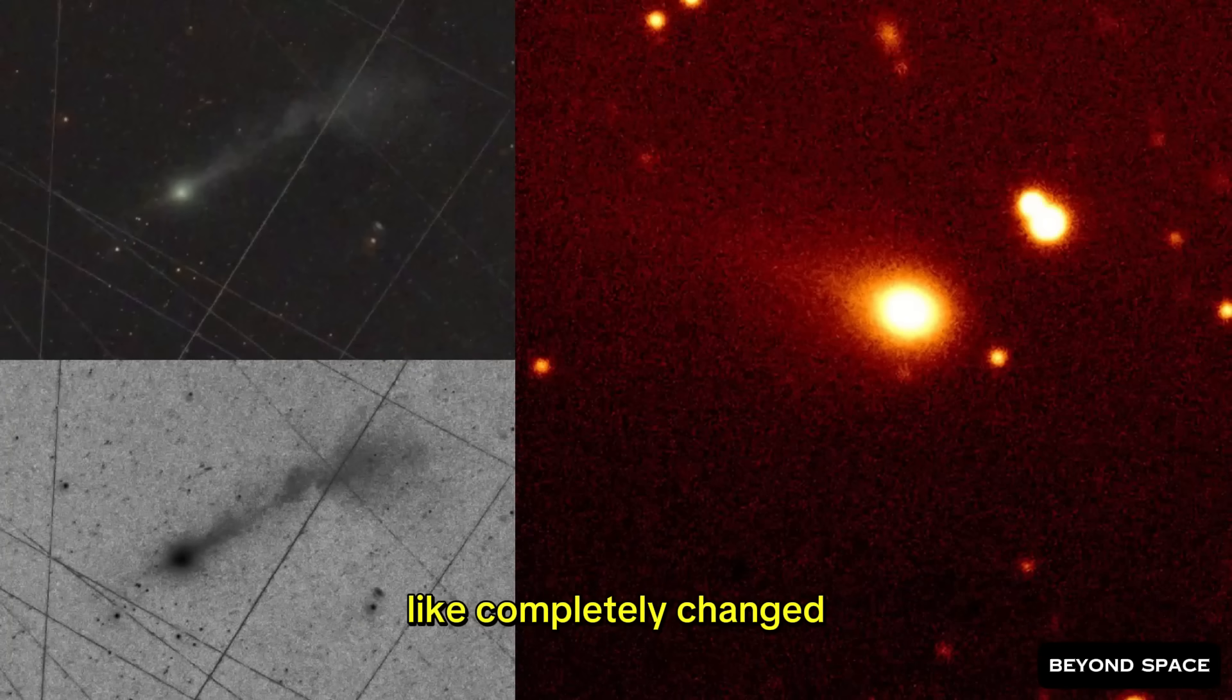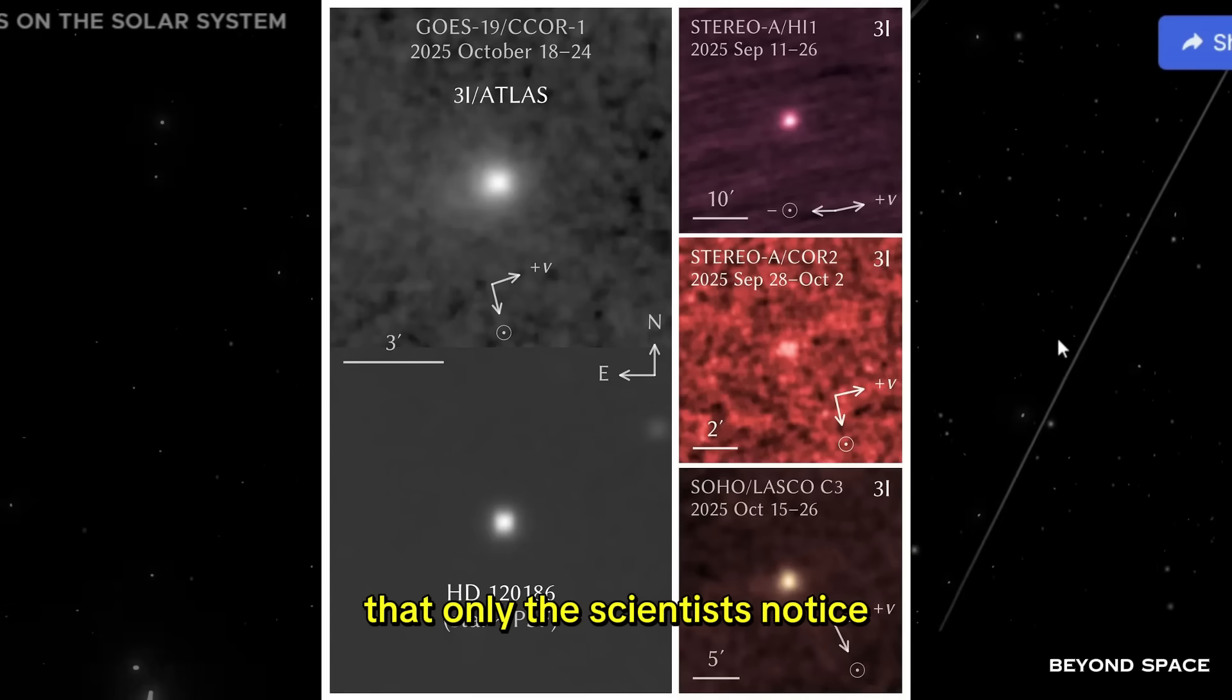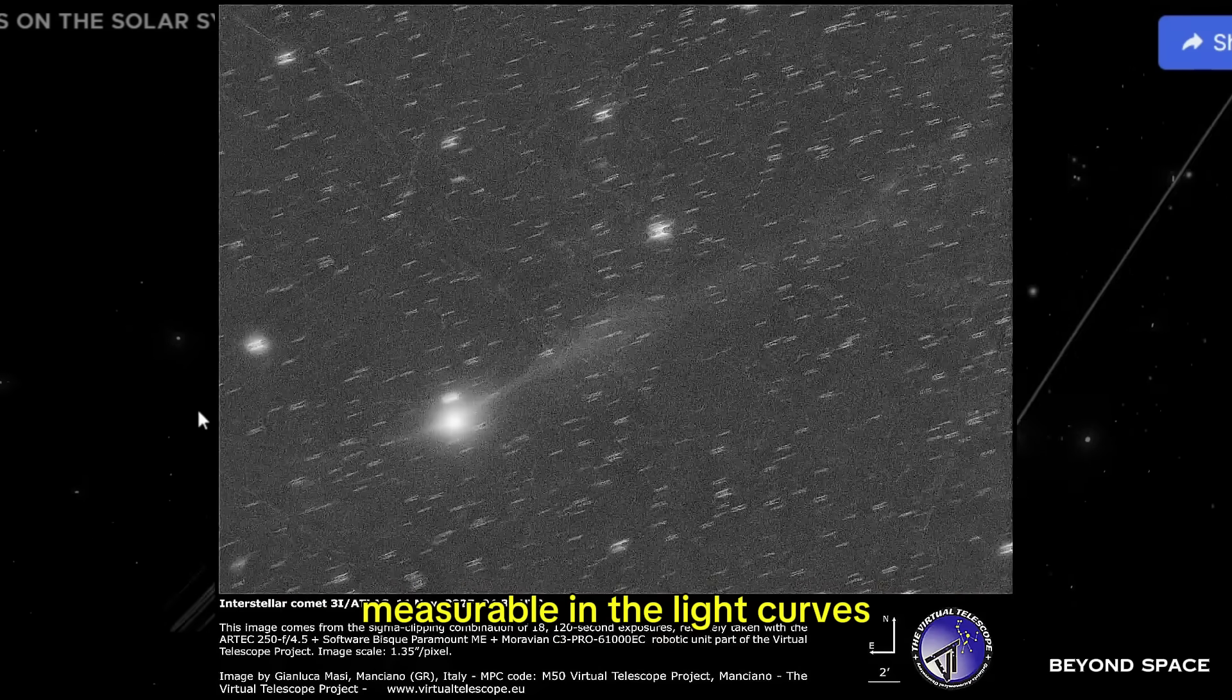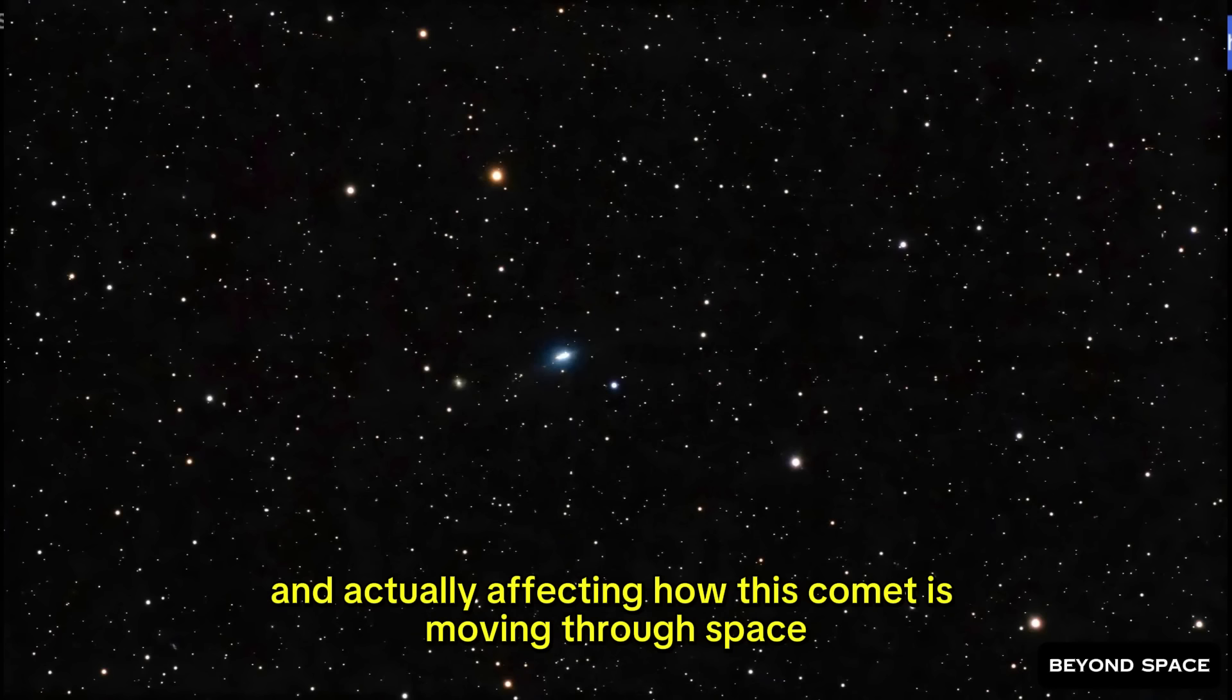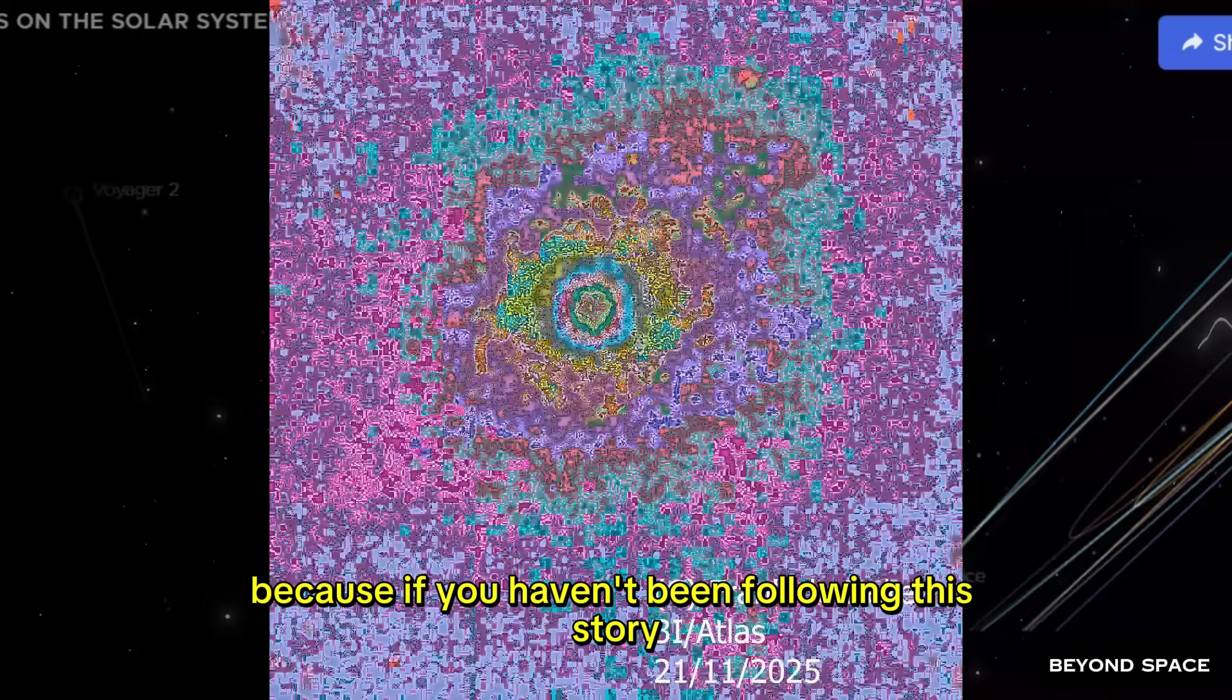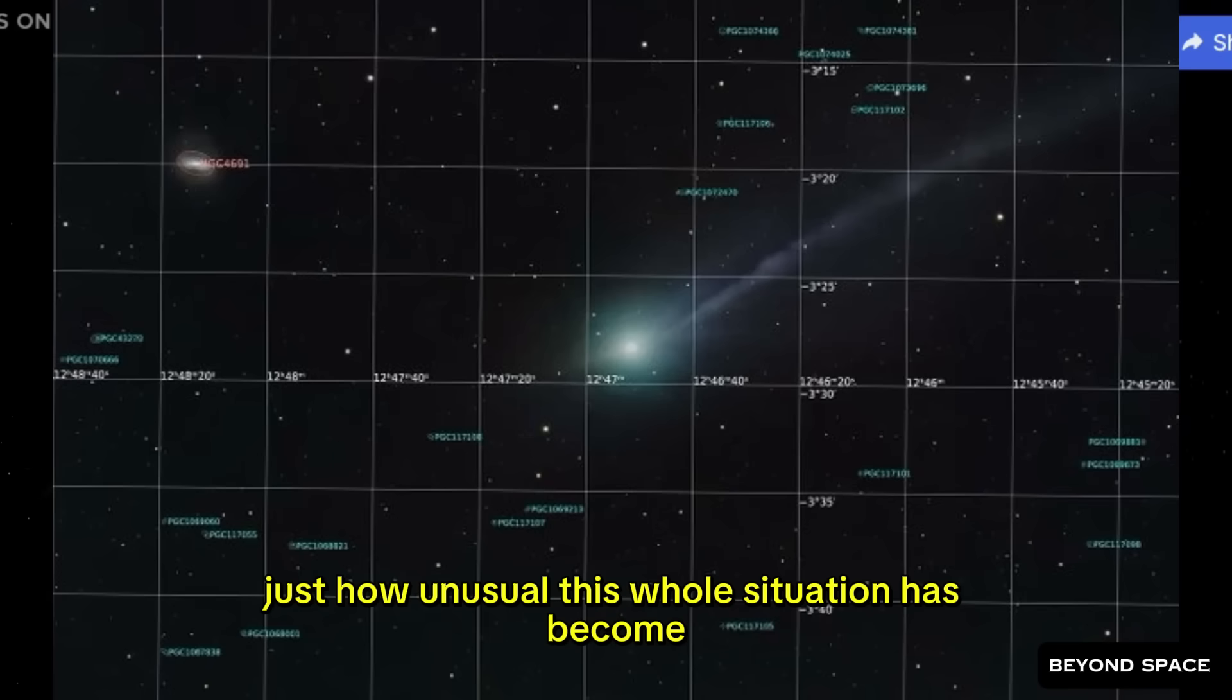Like, completely changed. And I'm not talking about some subtle shift that only the scientists notice. I'm talking about a full transformation that's visible in the images, measurable in the light curves, and actually affecting how this comet is moving through space. Let me back up for a second and give you the context, because if you haven't been following this story, you need to understand just how unusual this whole situation has become.